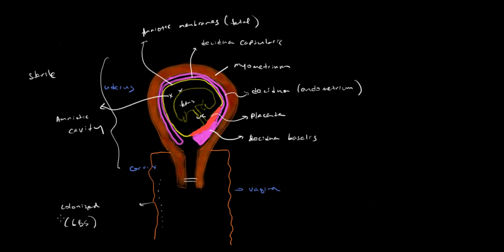GBS is not always present — some women are colonized with GBS and some aren't. Sometimes membrane rupture occurs normally and physiologically, such as in labor. But it could happen that rupture of membranes precedes the onset of delivery and parturition by a sustained period of time. So let's say these membranes rupture and parturition and delivery has not occurred, and labor has not occurred yet. With prolonged rupture of membranes and labor hasn't happened, bacteria have the opportunity to ascend and colonize the amniotic fluid and colonize the amniotic space.